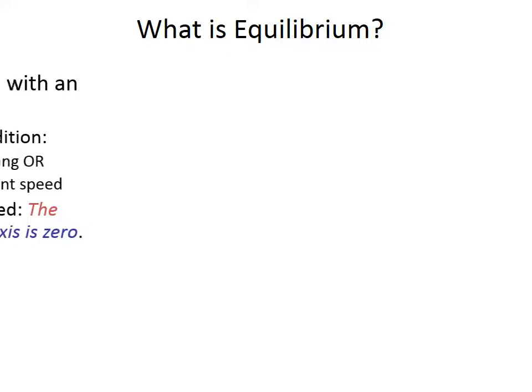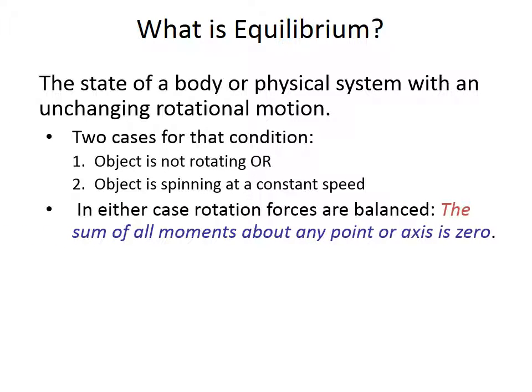So, just what is rotational equilibrium anyway? Well, you can read it here, and it gives you two cases. It's the state of a body or physical system that's unchanging rotational motion. The first case here talks about not rotating, and the second case says that it can be rotating, but as long as it's at a constant speed. We're just going to consider an object that is not rotating at all.